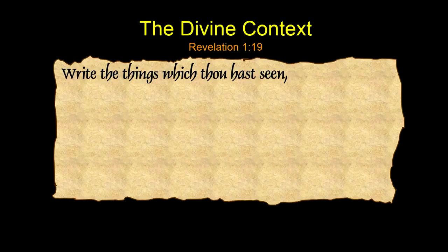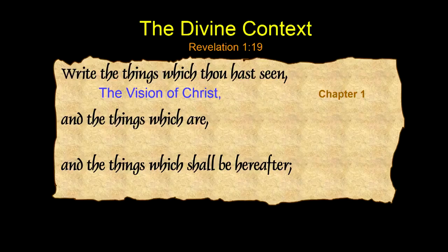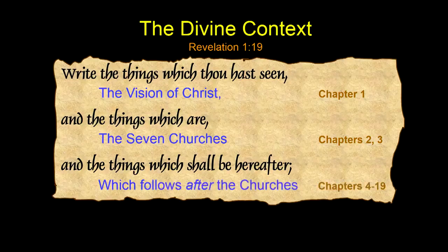The book of Revelation has its own outline in verse 19 of chapter 1, where John is instructed to write the things which thou hast seen, and the things which are, and the things which shall be hereafter. Those are three sections that profile the entire book of Revelation. The things which he had seen finish chapter 1. Then he gets to the second section — the things which are — the seven churches, which actually existed at that time.